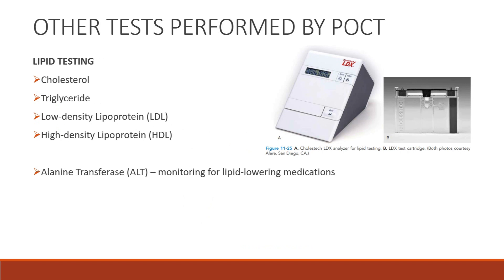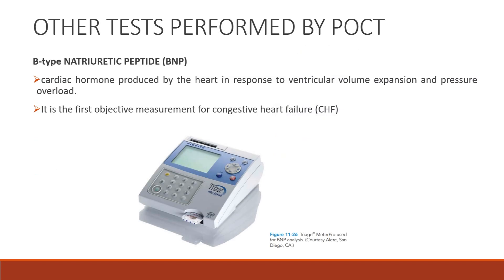Next is lipid testing. Parameters include cholesterol, triglycerides, low-density lipoprotein (LDL), and high-density lipoprotein (HDL). The enzyme alanine aminotransferase (ALT), found and produced in the liver, is used for monitoring lipid-lowering medications. Next is B-type natriuretic peptide (BNP), a cardiac hormone produced by the heart in response to ventricular volume expansion and pressure overload. It is the first objective measurement for congestive heart failure.